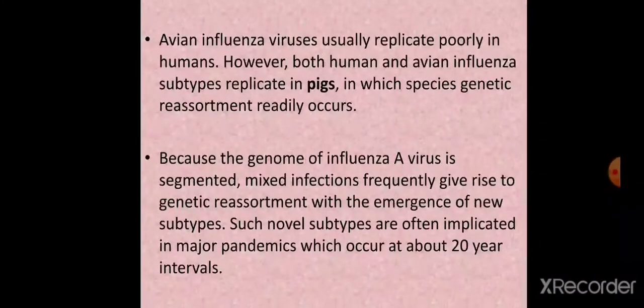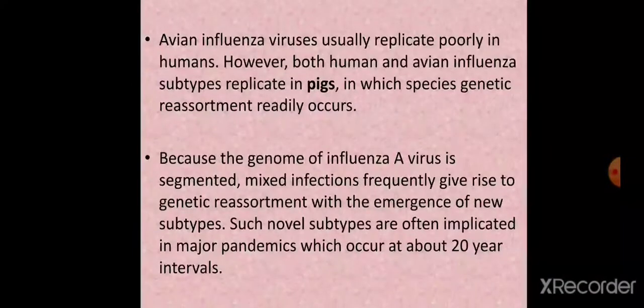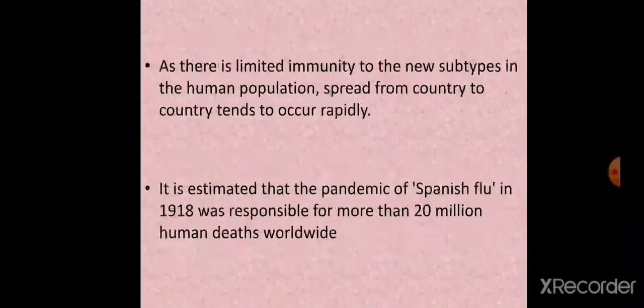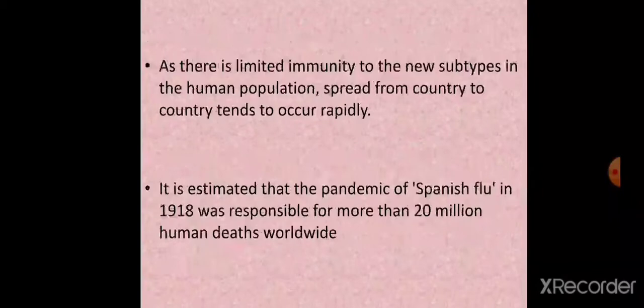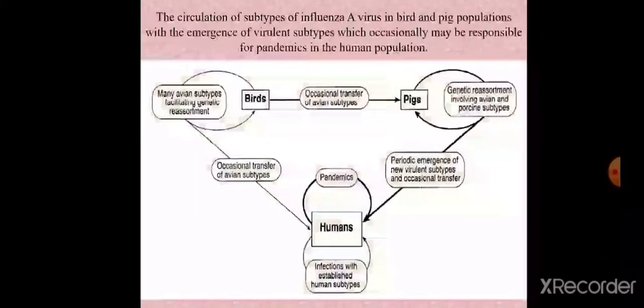As there is limited immunity to new subtypes in the human population, spread from country to country tends to occur rapidly. It is estimated that the pandemic of Spanish flu in 1918 was responsible for more than 20 million human deaths worldwide — one of the major human pandemics on record.